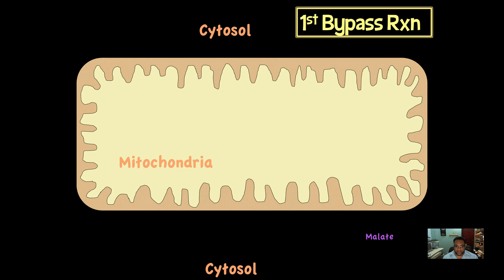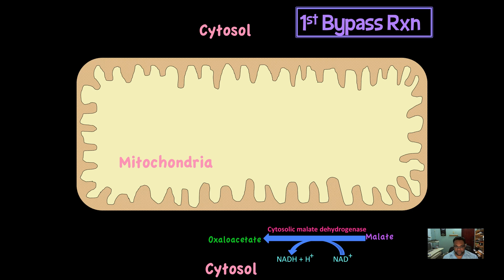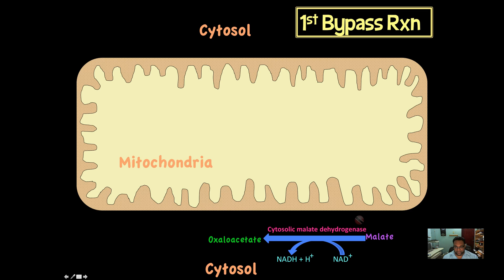Once the malate is out in the cytosol, we can convert the malate back into oxaloacetate. We use malate dehydrogenase once again, but to distinguish its location we call it cytosolic malate dehydrogenase. This is the reverse reaction of what happened before — malate is converted to oxaloacetate, so NAD+ is converted to NADH. In other words, malate is being oxidized to oxaloacetate.